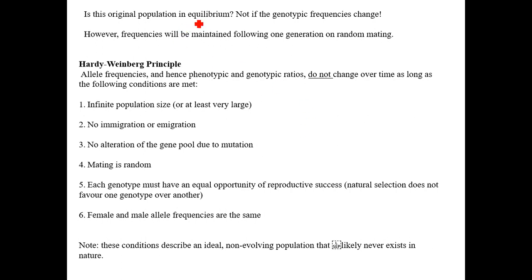We say the original population was in equilibrium because its frequencies didn't change into the next generation. If the numbers differ from the original population but you then have a round of random mating, that will stabilize the numbers for future generations, so allele frequencies, genotypic frequencies, and phenotypic frequencies will no longer change.